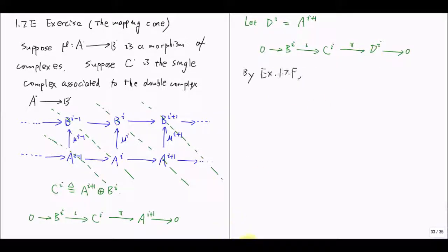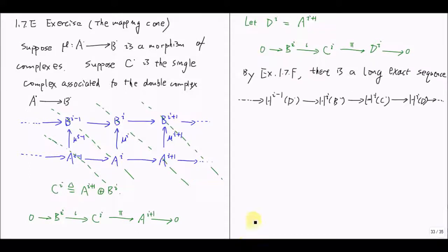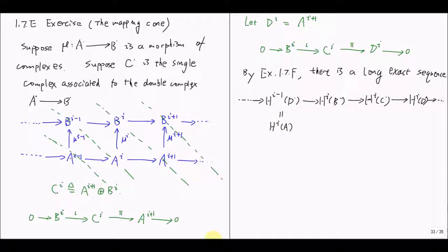To make the superscripts consistent, we denote A superscript i+1 by D superscript i, so the short exact sequence becomes B superscript i, C superscript i, and D superscript i. By exercise 1.7.f, there is a long exact sequence of cohomologies of the complexes D, B, C. Plugging A superscript i-1 back in, the i-1 cohomology of complex D is the same as the i-th cohomology of complex A, and the i-th cohomology of D is the i+1 cohomology of complex A. This gives the long exact sequence for the mapping cone.